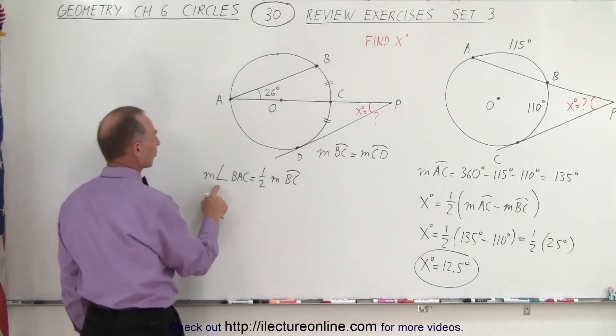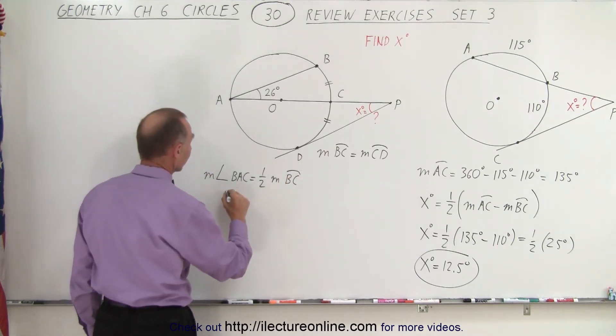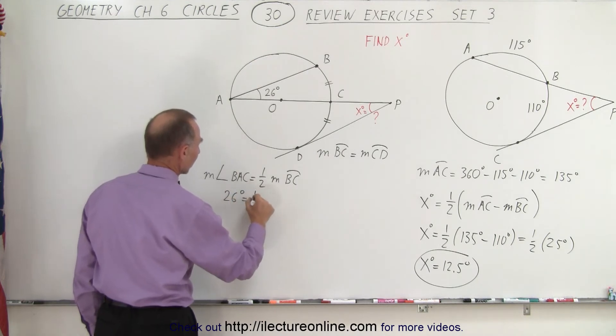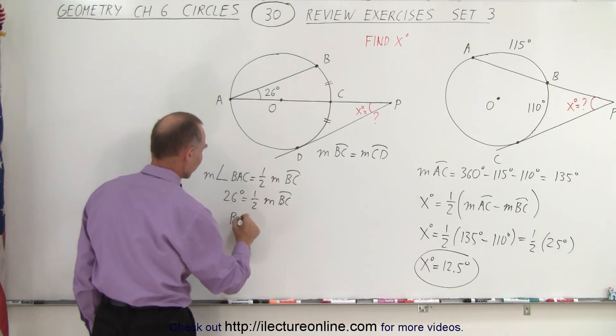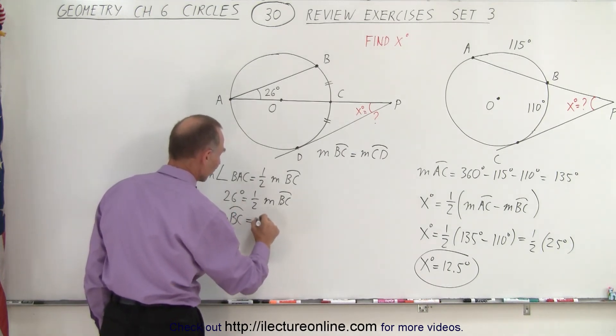And since we know the measure from B to A to C, we can say that's equal to 26 degrees. That's equal to one-half times the measure from B to C, which therefore means that the measure from B to C is equal to 2 times 26, or 52 degrees.